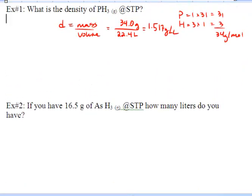Next, if you have 16.5 grams of arsenic trihydride at STP, how many liters do you have? So we've been given a mass of a gas and we're going to determine how many liters we have. We've got our density formula equals mass over volume. We're looking for the amount of liters. So we're going to find the density using this number of grams, and then we're going to find the liters at STP.